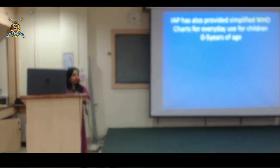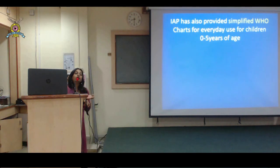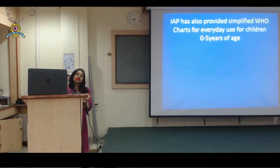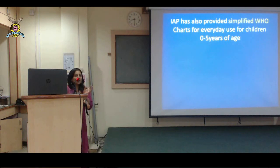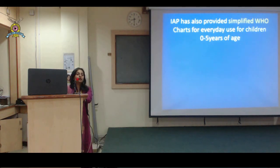Coming to 0 to 5 years of age, what would you use? We use the WHO charts. The WHO has made these charts for use all over the world. WHO charts are used universally because they studied children all over the world, including India as a center, and show us how children should normally grow. To universalize the whole pattern across the globe, they have recommended using WHO growth charts for children 0 to 5 years of age.